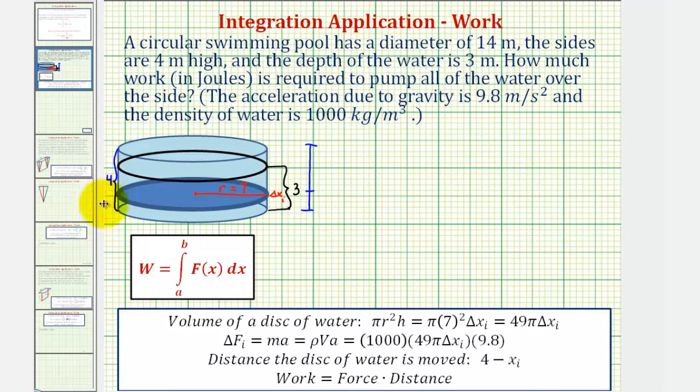If we consider this disk of water here, notice how the height or the thickness would be delta x, or more specifically, delta x sub i. If we let x be the distance from the bottom, then we could label this length here x sub i, and therefore, notice how this disk must travel four minus x sub i meters over the top. Our goal here is to find the increment of work required to pump this disk of water over the top, which we'll call delta w sub i, which is equal to the force times the distance.